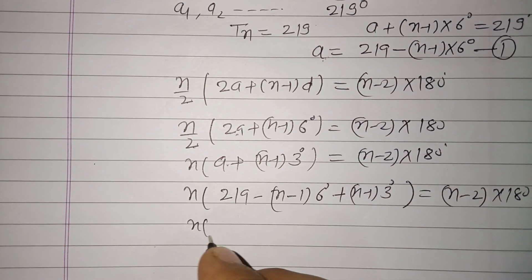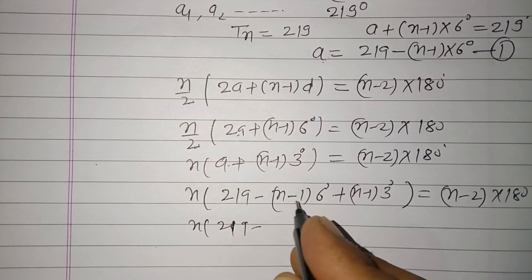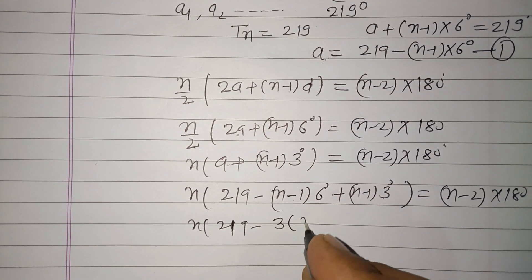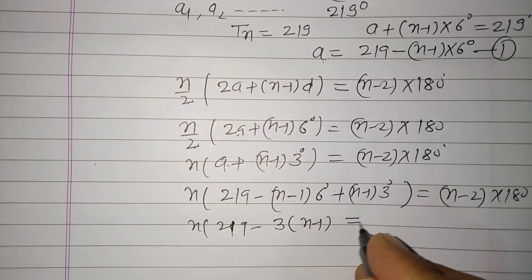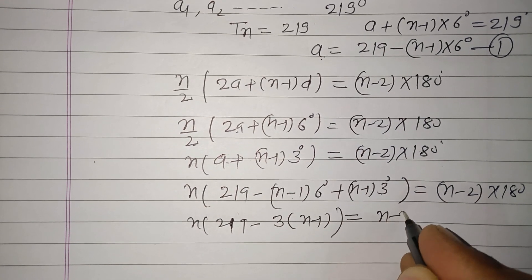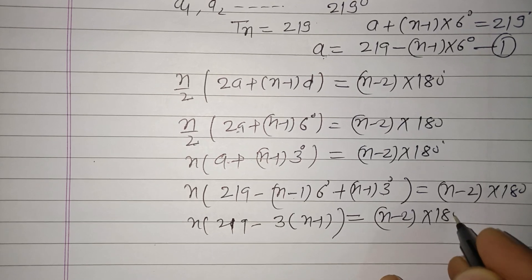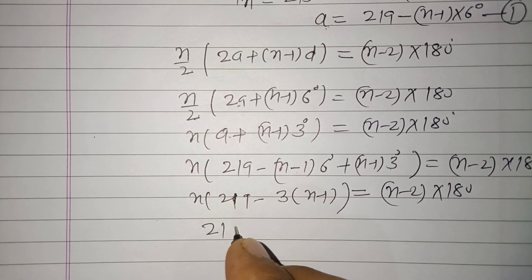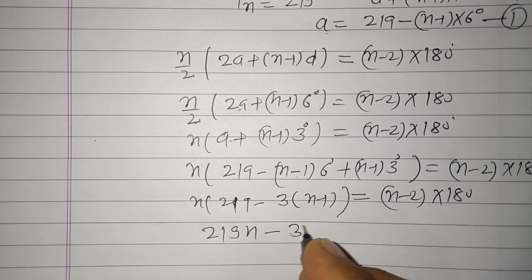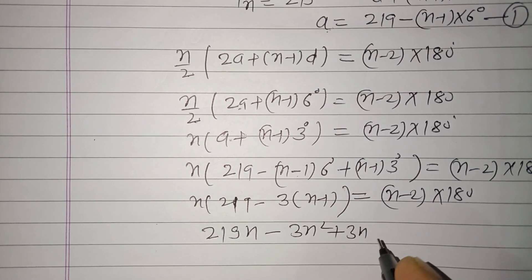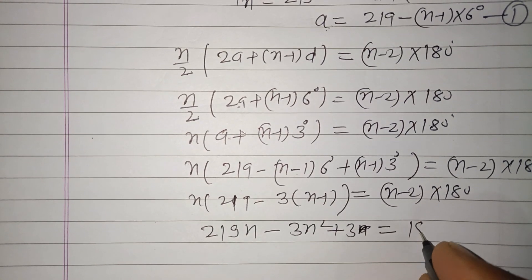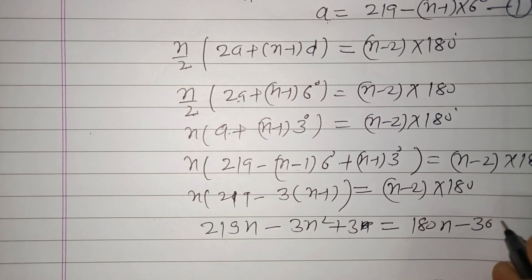Now solving this: 219 minus, this is 6 minus 3 which is 3, so 3 into n minus 1 equals n minus 2 into 180. Solving this, we get 219n minus 3n² plus 3n equals 180n minus 360.